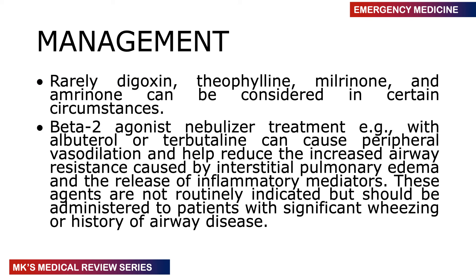Rarely, drugs like digoxin, theophylline, levosimendan, or amrinone can be considered in certain circumstances. Some patients may be nebulized with a beta-2 agonist like albuterol or terbutaline, which cause peripheral vessel dilatation, reduce airway resistance, and improve airway patency. These are not routinely indicated but should be given to patients with significant wheezing or a history of airway disease, as the interstitial pulmonary edema and release of inflammatory mediators can increase airway resistance.